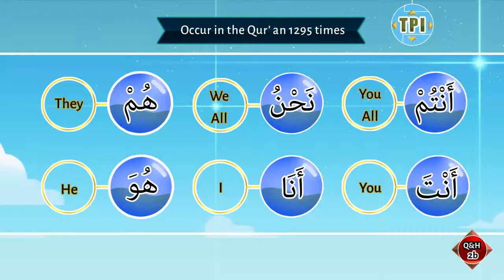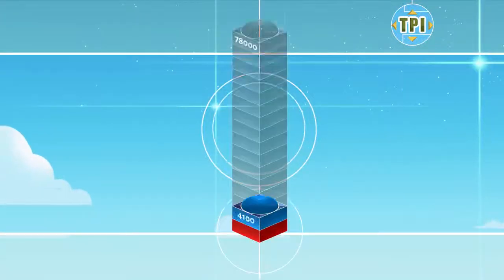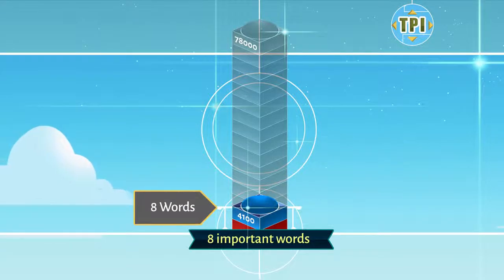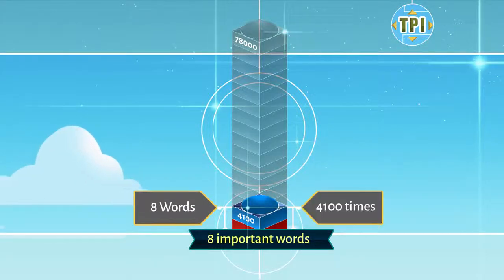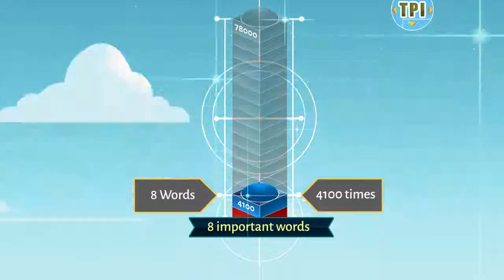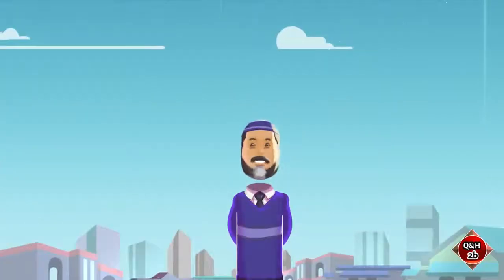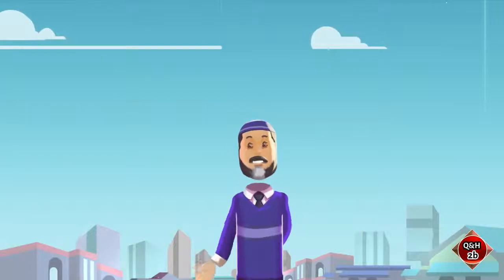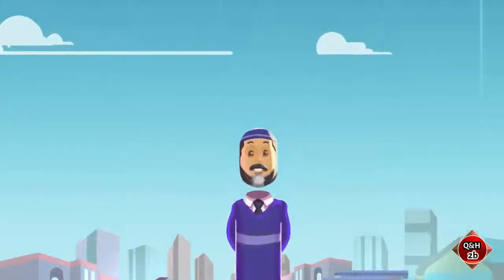By the end of this lesson 2B, we have learned eight important words which occur in the Quran almost four thousand one hundred times. Alhamdulillah, jazaakumullah khair. See you in the next lesson 3A. Wassalamu alaykum wa rahmatullahi wa barakatuh.